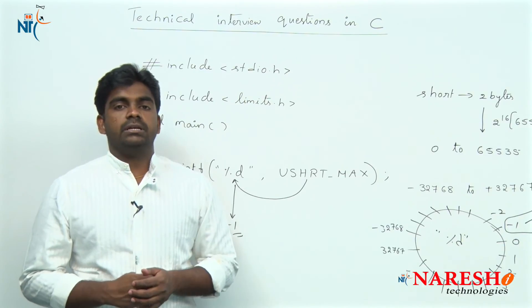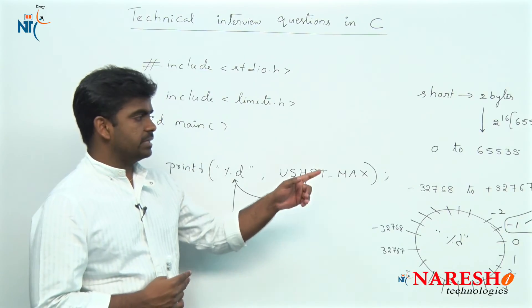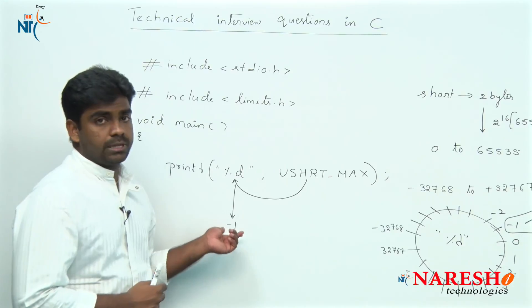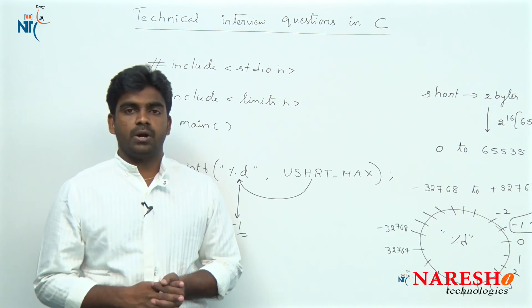In that signed circle only it will check. So 65,535 equals minus 1. That is the output of this program. Hope you understood.